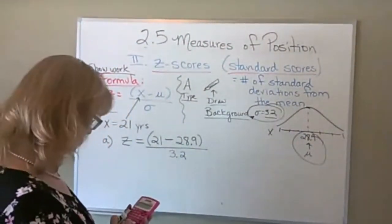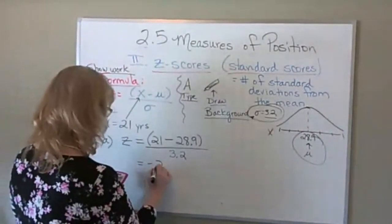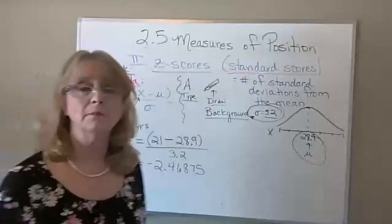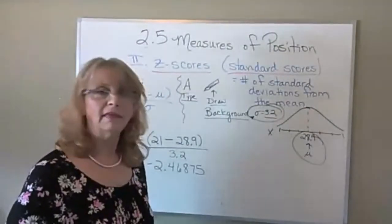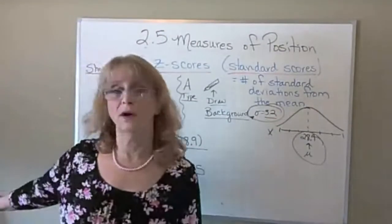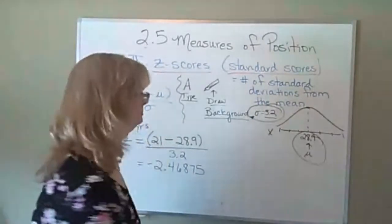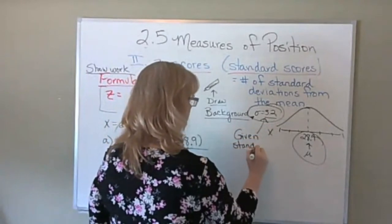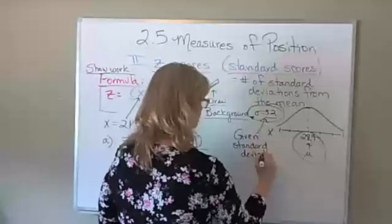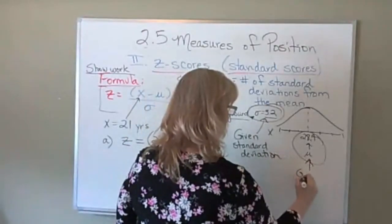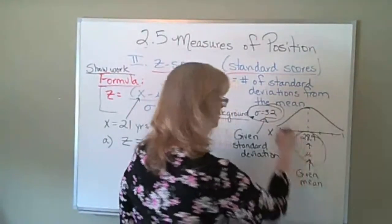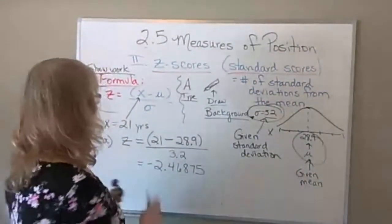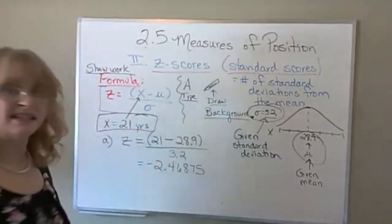A student asked how I got the 3.2 — it was given in the problem. They told us in the question that the standard deviation was 3.2 and the mean was 28.9. Both of those were given, and then they gave us the data value of 21 and said to change it to a z-score using the formula.